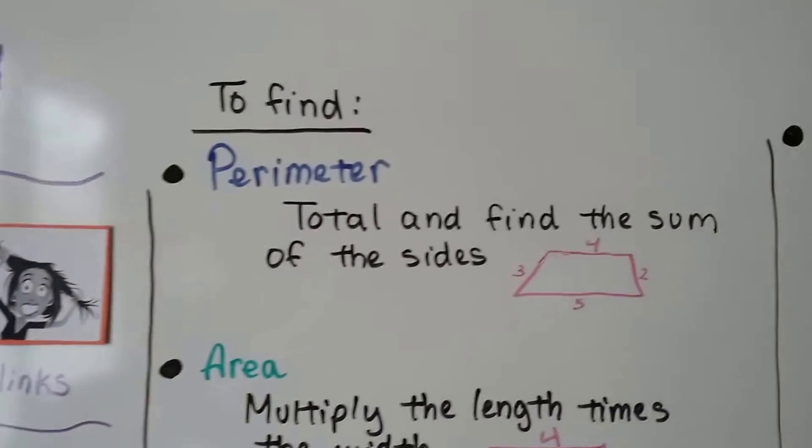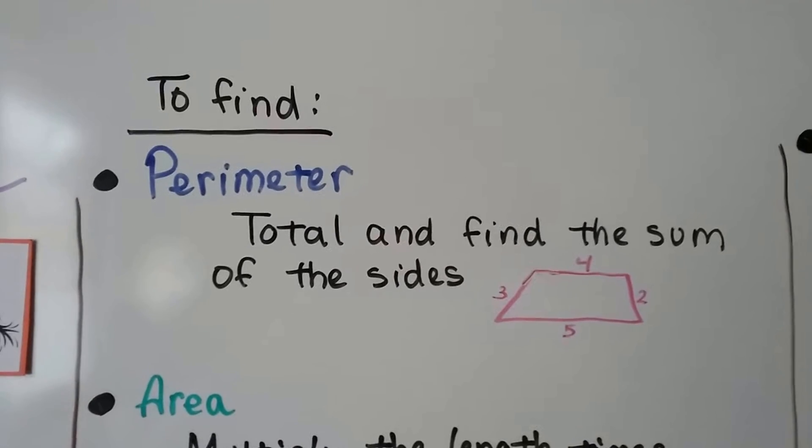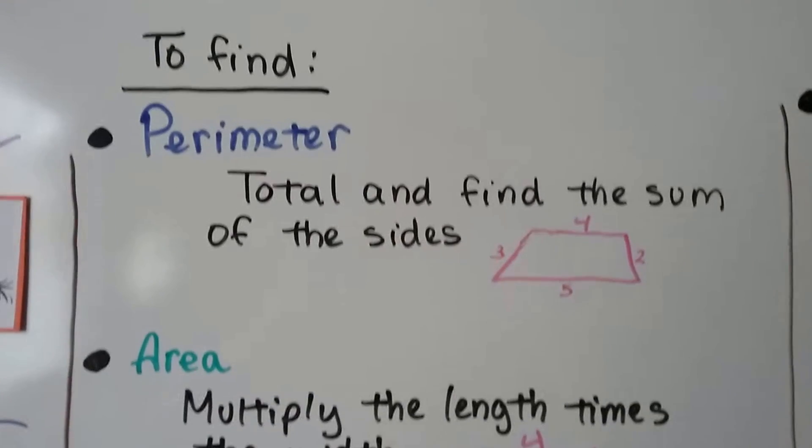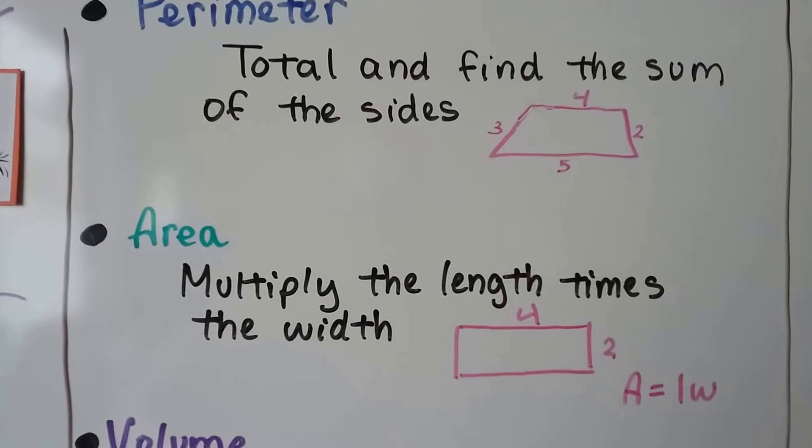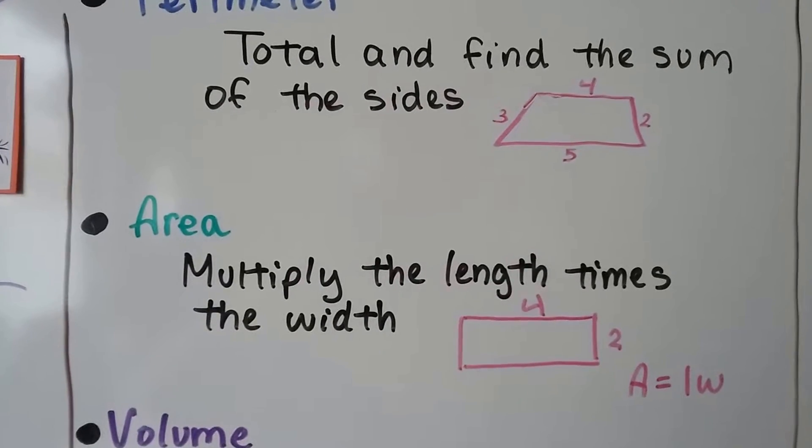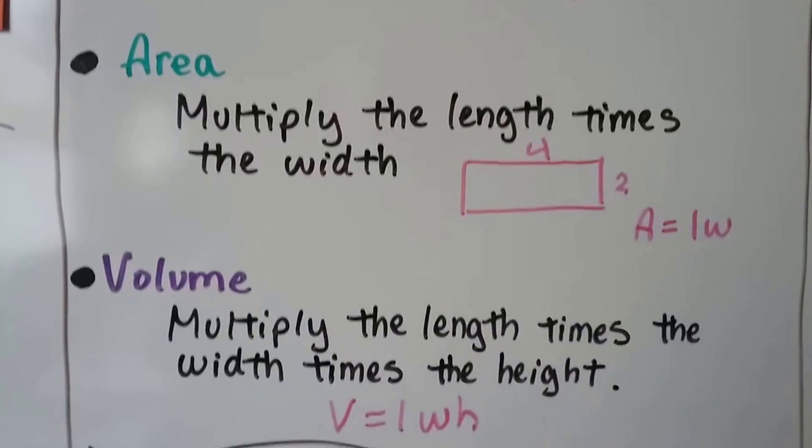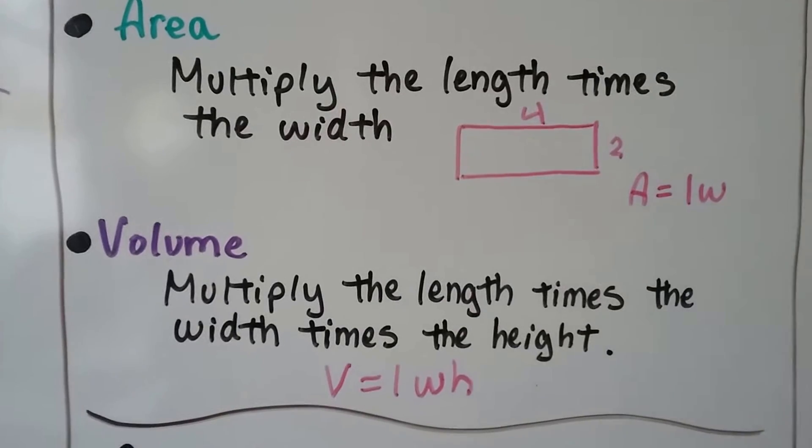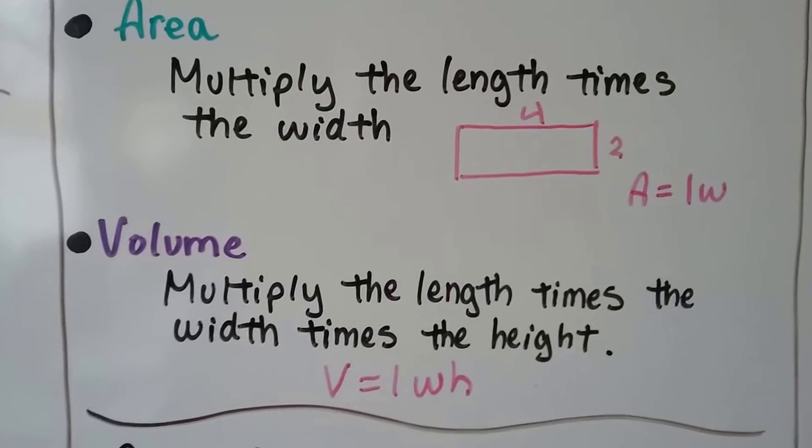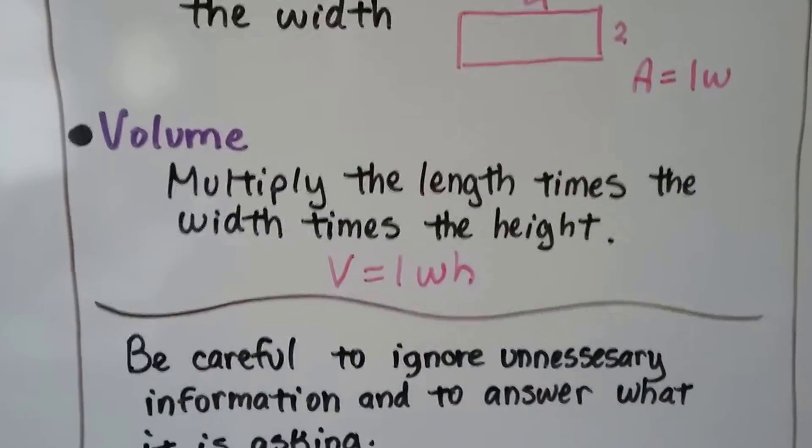To find perimeter, we total and find the sum of the sides. We just add up the length of the sides, and that's the perimeter. For area, we multiply length times width for a rectangle or a square, and we would do like 4 times 2, and that would tell us that the area was 8 units. For volume, we would do the length times width times height, and that would tell us how many cubic units are inside of that object.